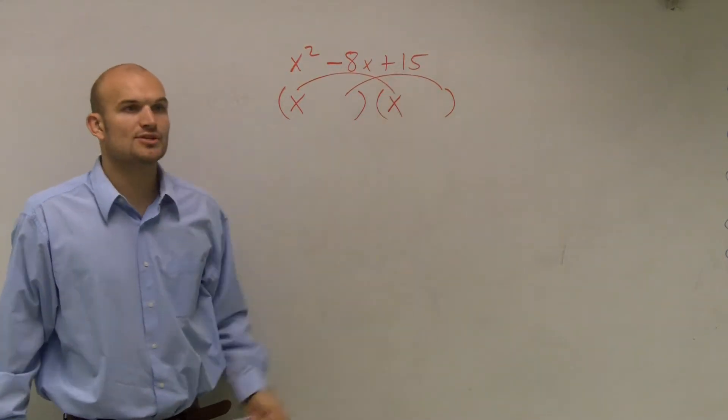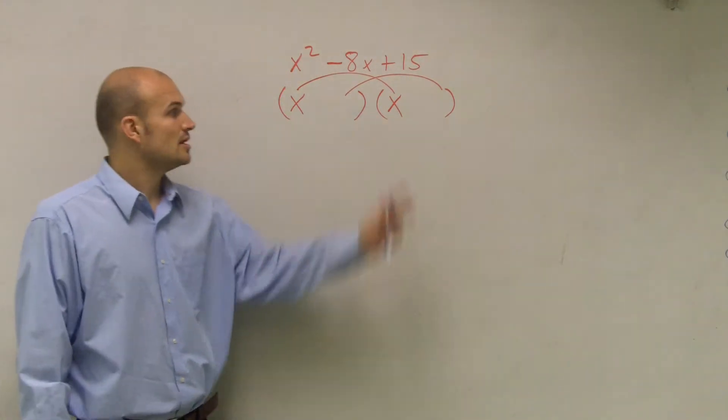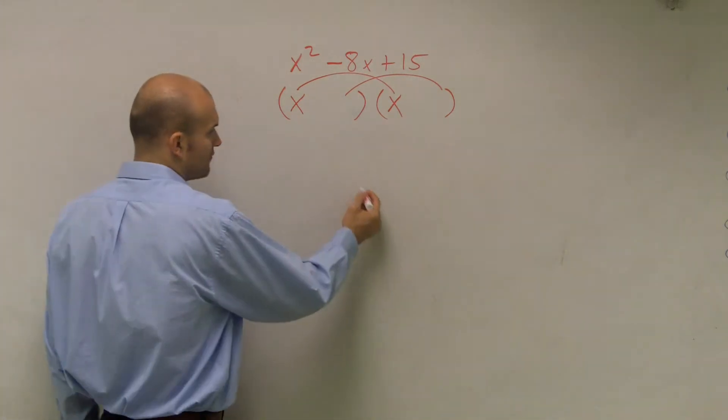Now we need to think about what two numbers are going to provide us with 15. And this is going to be a little bit of an issue right here, because there's multiple numbers that multiply to give us 15.